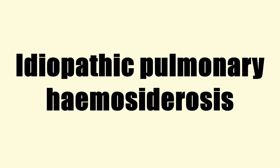It has been given several names, including haemosiderin accumulation, pulmonary haemosiderosis, brown induration of lung, essential brown induration of lung, and Selin-Gelishter syndrome.